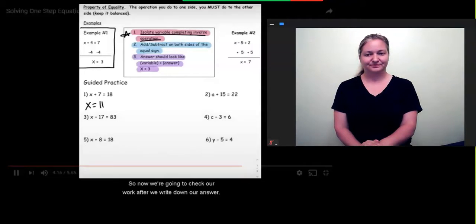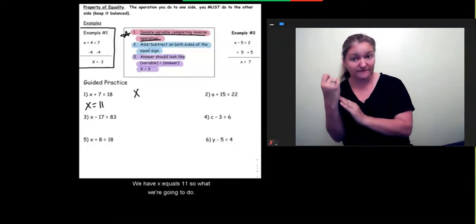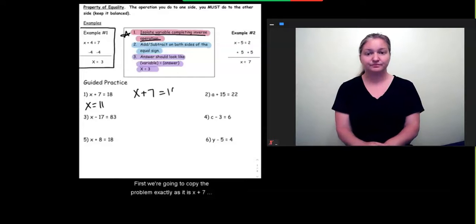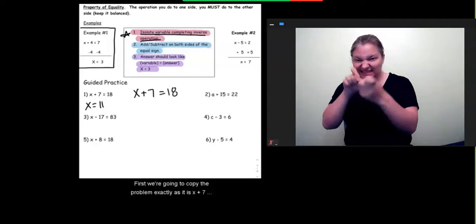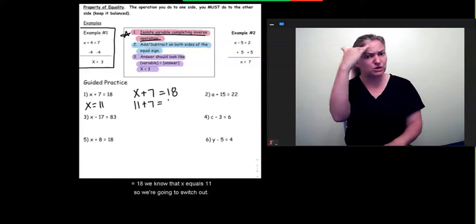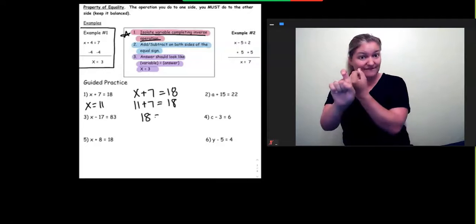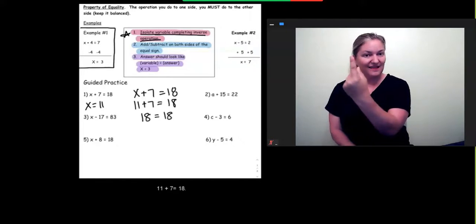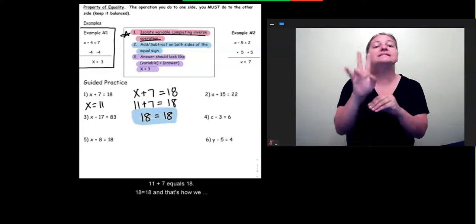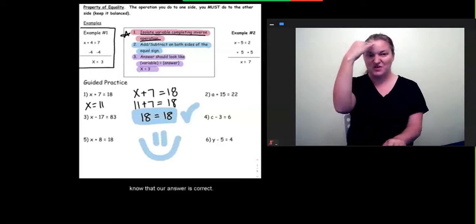So, now we're going to check our work. After we write down our answer, we have x equals 11. So, what we're going to do, first we're going to copy the problem exactly as it is: x plus 7 equals 18. We know that x equals 11. So, we're going to switch that out and write 11 plus 7 equals 18. 18 equals 18. And that's how we know that our answer is correct.